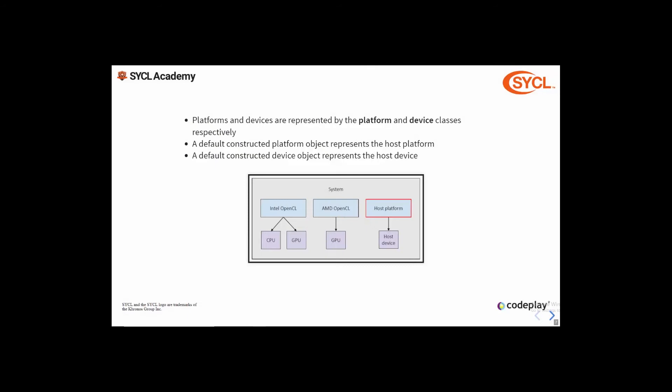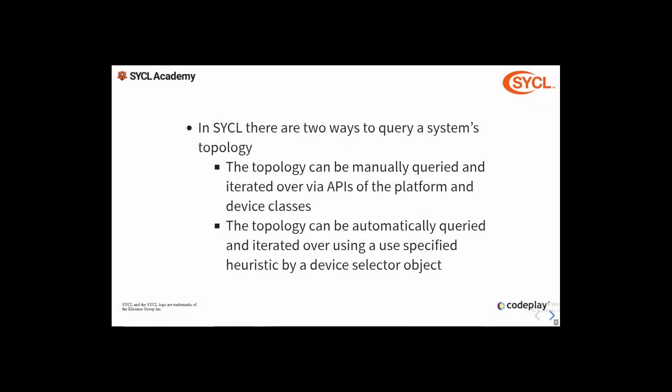Platforms and devices are represented by the platform and device classes respectively. A default constructed platform object creates a host platform and a default constructed device object creates a host device. There are two ways in SYCL to traverse the topology of a system: firstly, APIs which allow you to manually query the available platforms and devices; and secondly, a mechanism called device selectors for automatically traversing the system and producing a device based on a heuristic for scoring devices.